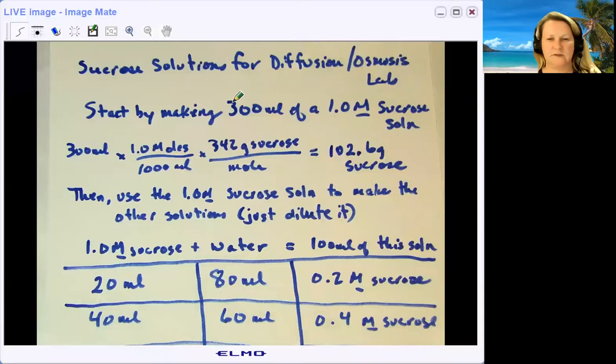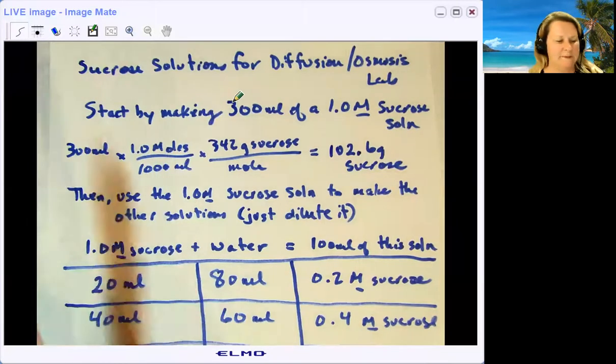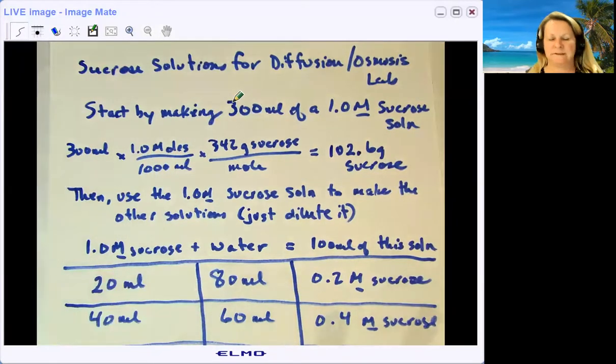Making the sucrose solutions for the diffusion osmosis lab - basically what you need is five different solutions: a 0.2 molar solution, a 0.4, 0.6, 0.8, and one molar solution. The hard way is to make each one of them up separately. I find that it's easier to make a whole bunch of the one molar sucrose solution and then just dilute it.